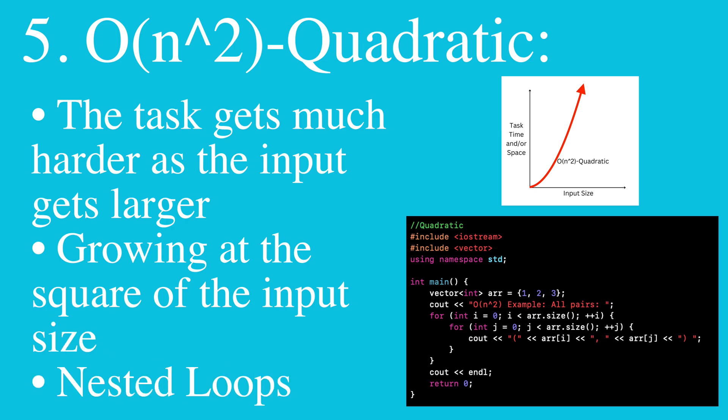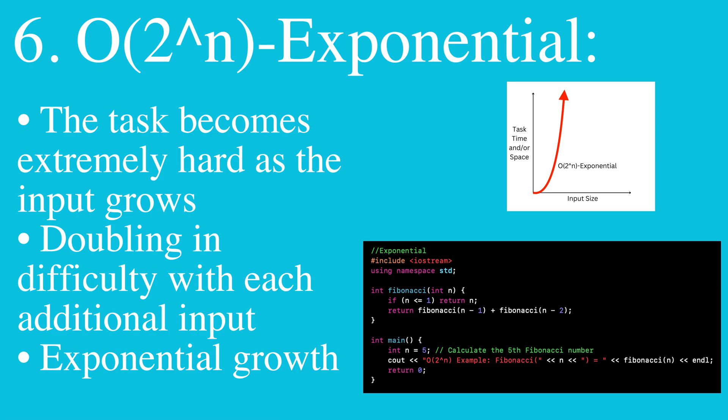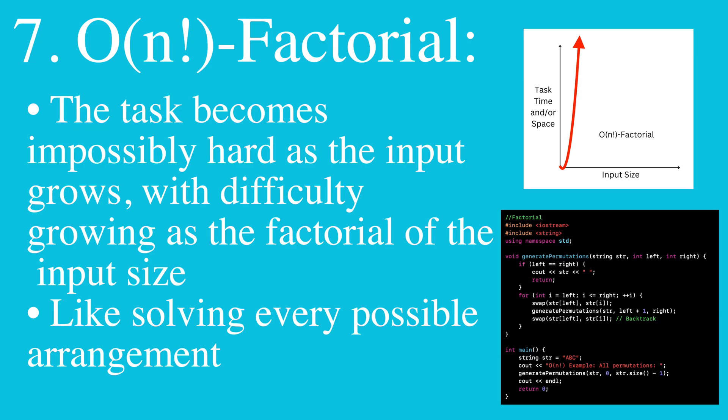Quadratic means the task becomes harder as the input gets larger, growing at the square of the input size, like nested loops. Exponential means the task becomes extremely hard as the input grows, doubling in difficulty with each additional input. Factorial means the task becomes impossibly hard as the input grows.